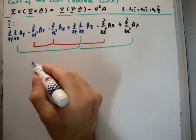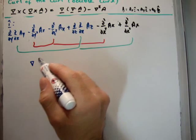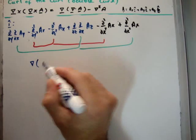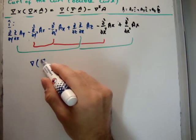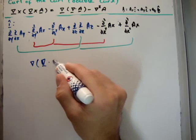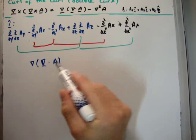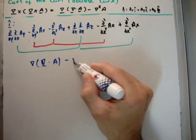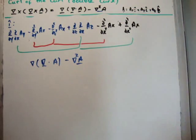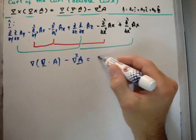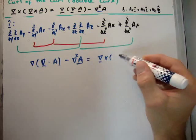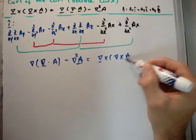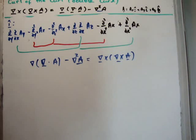You're going to get the gradient of the divergence of A minus grad squared A. And there should be a vector sign underneath that. And that of course is going to be the curl of the curl of A. Very straightforward.